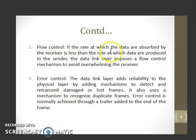If the rate at which the data are absorbed by the receiver is less than the rate at which data are produced in the sender, the data link layer imposes a flow control mechanism to avoid overwhelming the receiver. This is called flow control.